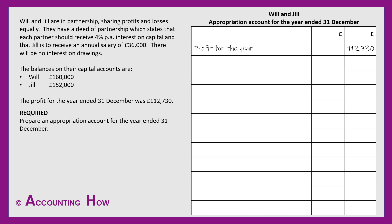The next thing is to see whether there is any interest on capital, and there is, so I'm going to deduct the interest on capital. This is something partners might decide to include in their deed of partnership — the basic principle is that they get a reward, a return on the capital they've invested. So at 4%, I work out 4% of their capitals: 4% of £160,000 means Will earns £6,400 interest, and Jill slightly less because she invested slightly less capital. I then deduct that from the profit for the year.